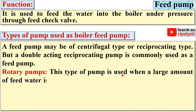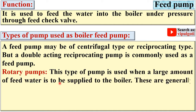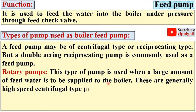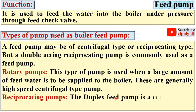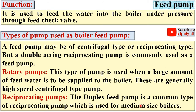Rotary pumps are used when a large amount of feed water is to be supplied to the boiler — these are generally high-speed centrifugal type pumps. The duplex feed pump is a common type of reciprocating pump used for medium size boilers. In short, rotary pumps are for large size boilers supplying large amounts of feed water, whereas reciprocating pumps are suitable for medium size boilers.